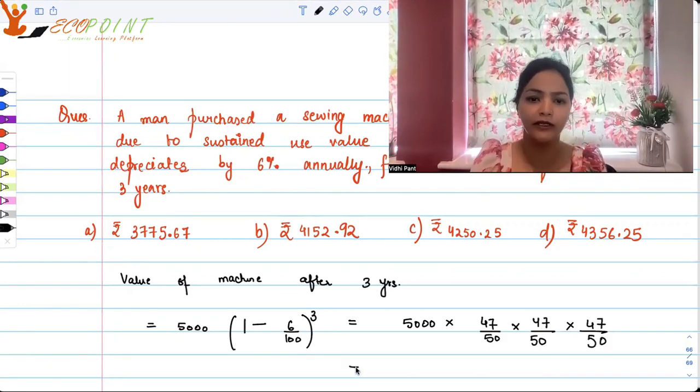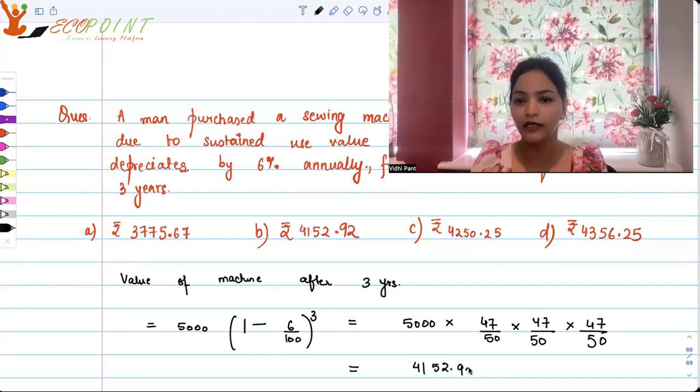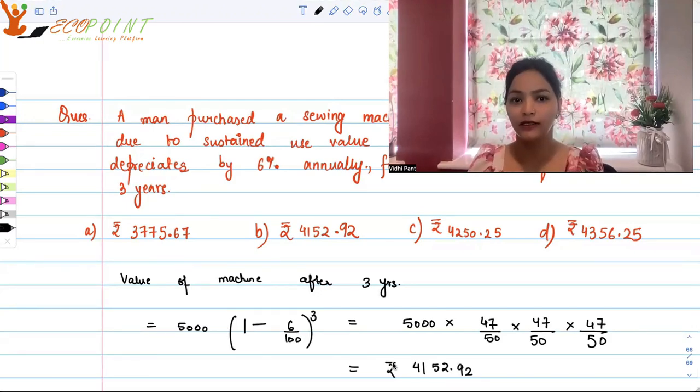Using calculator, this can be calculated, simplify karke multiply karna hai, that can be done. The answer you will get will be 4152.92. So this is what you will get, so depreciate ho ke, you will get this value, so just note, here it won't be plus 1, of course, because it's depreciating.